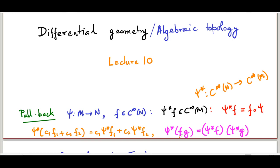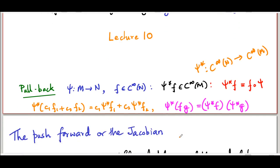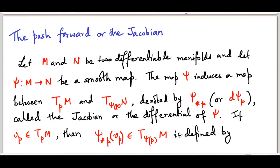Now, with this background, let me start talking about the so-called push forward, which is in a way an opposite to pullback. But frankly, we don't really call it push forward; we go by its more formal name, the Jacobian or the differential. The definition of the push forward goes as follows. Once again, M and N are two differentiable manifolds, and shy is a smooth map from M to N — that is, it's a C-infinity differentiable map.